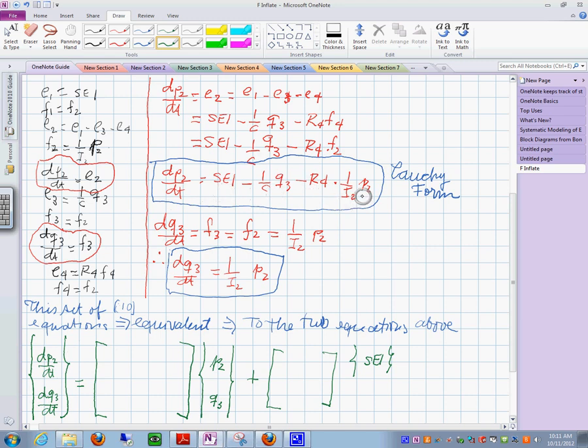This one, you see this term here? That is going to be minus R sub 4 over I sub 2. That's this term right there. This one is minus 1 over C. And this SE1 here is 1.